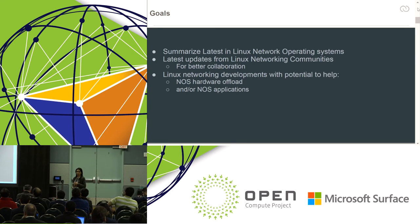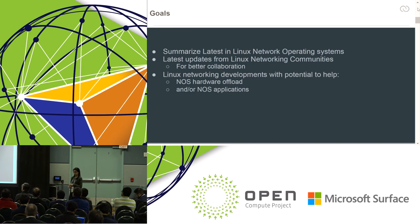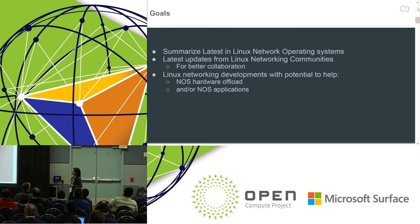Before I start rambling on about all the new updates in Linux kernel networking, I just wanted to get everyone on the same page. The context of this talk is really network operating systems — open network operating systems. At Cumulus, we are heavily involved in using the Linux networking model on switch platforms. We contribute to kernel communities and the Linux ecosystem, and we also leverage a lot from the community. This talk is about sharing some of those updates and possible collaboration examples.